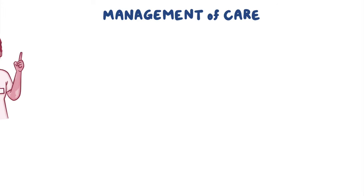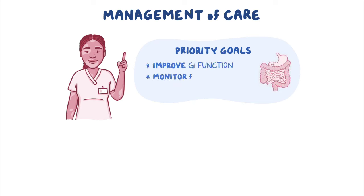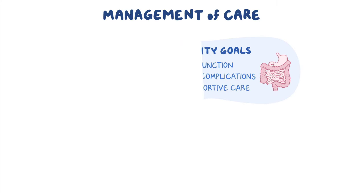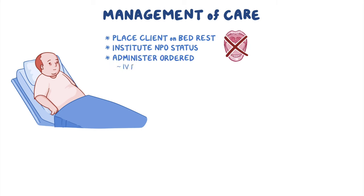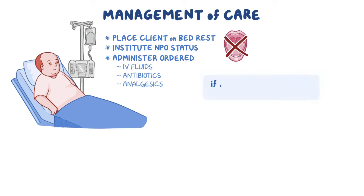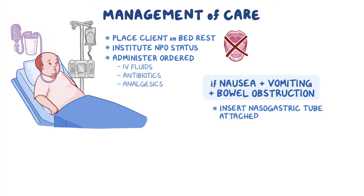Now let's look at the nursing care you'll be providing for a client with diverticular disease. Priority goals of care are to improve gastrointestinal function, monitor for complications, and provide supportive care. Begin by placing your client on bed rest, instituting NPO status, and administering the ordered IV fluids, antibiotics, and analgesics. If your client has nausea and vomiting and is diagnosed with a bowel obstruction, insert a nasogastric tube attached to low suction.